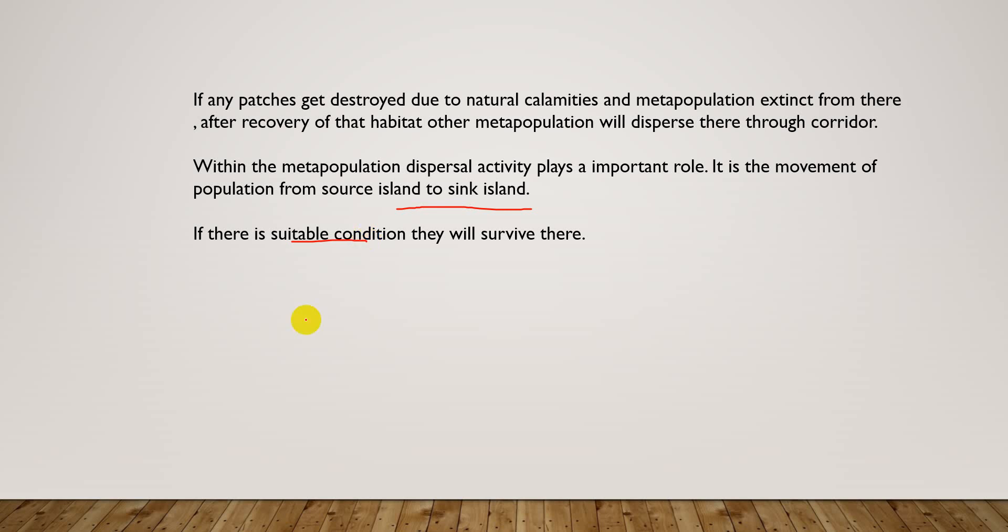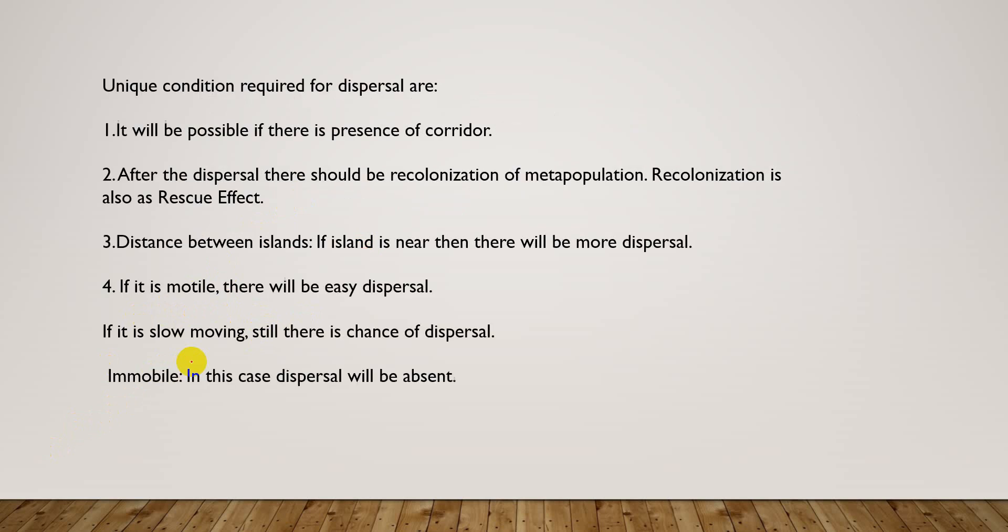This local extinction is also known as extirpation. Here are some of the unique conditions required for dispersal events: It will be possible if there is presence of corridor. Corridor is one of the most important things.